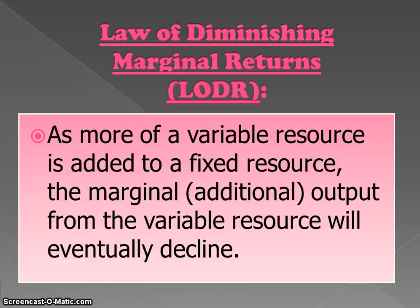This pattern is always going to happen. It's known as the law of diminishing marginal returns — sometimes economists say LODAR. As more of a variable resource is added to a fixed resource — as more sandwich artists are added to the shift at Subway — the marginal or additional output from the variable resource will eventually decline. The additional number of sandwiches each worker adds to total output will eventually fall, as we just saw. This is a really important law to know because it helps us understand why cost curves and profit curves behave the way they do.